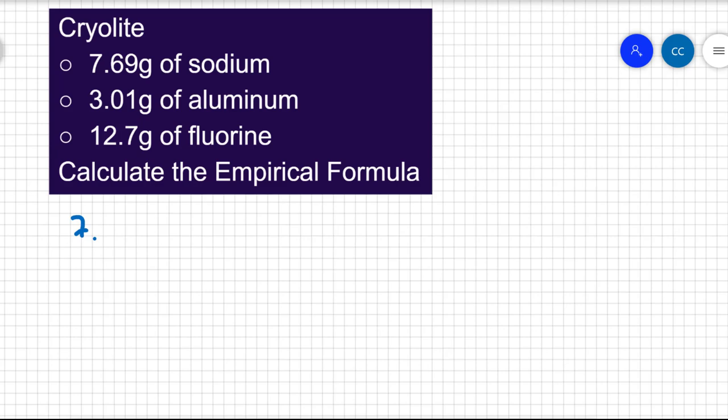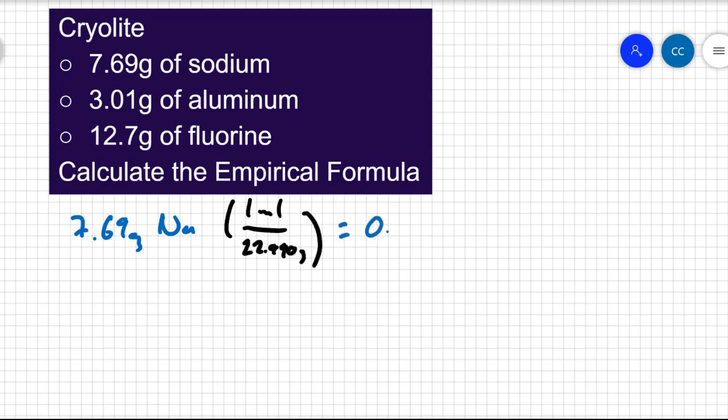I have 7.69 grams of sodium. One mole of sodium has a mass of 22.99 grams. So I have 0.334 moles of sodium.